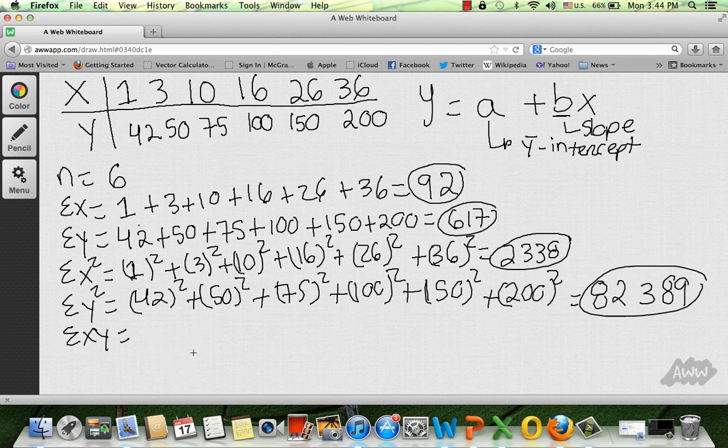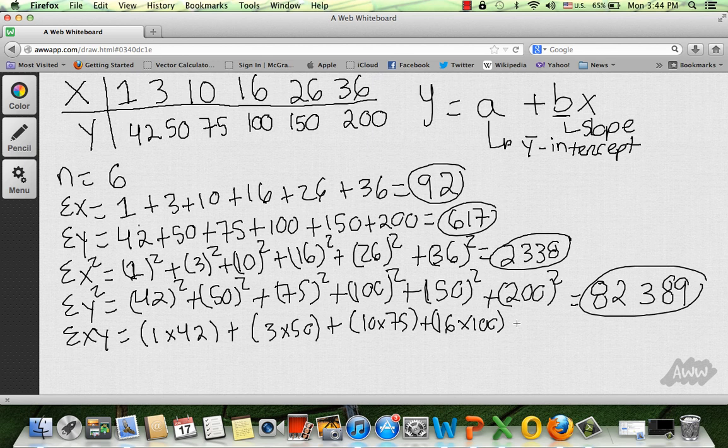I promise you, we're almost done. Now we're going to do the sum of x times y. That means we're going to do 1 times 42 plus 3 times 50 plus 10 times 75, and you get the point, plus 16 times 100, doing everything step by step so you don't get lost. So we're going to do plus 26 times 150 plus 36 times 200, and all this is going to be equals to 13,642.